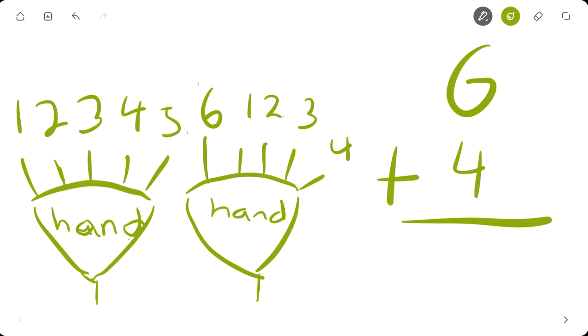Now, let's add all the fingers together by counting them all: 1, 2, 3, 4, 5, 6, 7, 8, 9, 10. And 4 plus 6 equals 10.